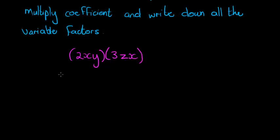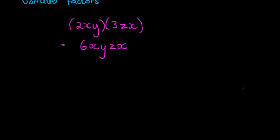Now we can see we've got multiplying the coefficients, multiplying 2 times 3, which gives me 6. And then I just write down all of the variable factors: x, y, and zx.